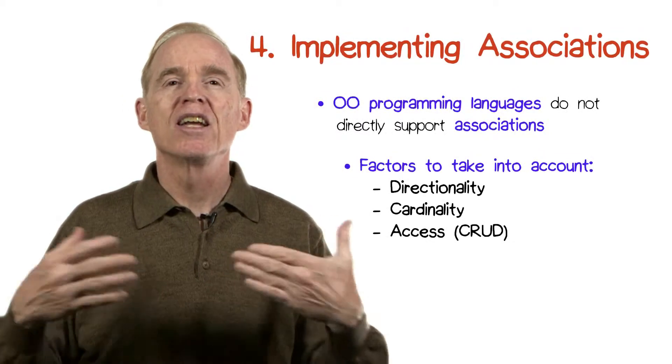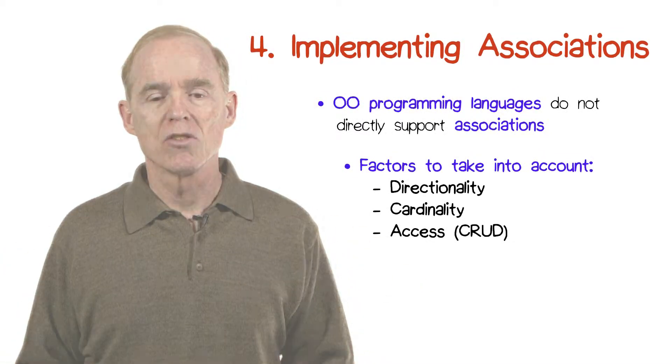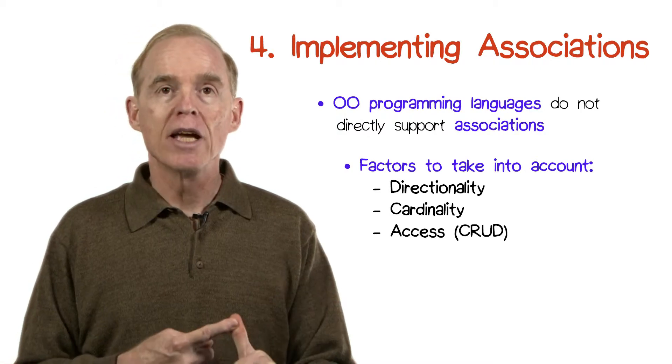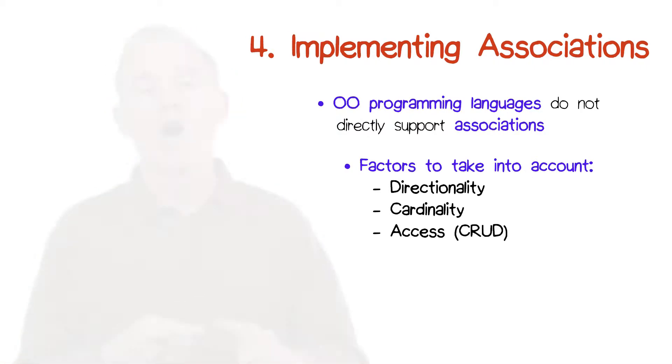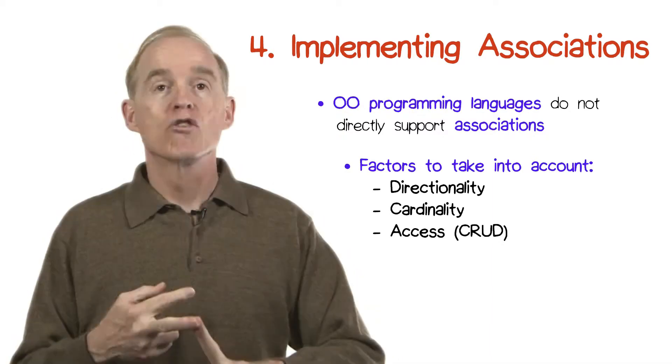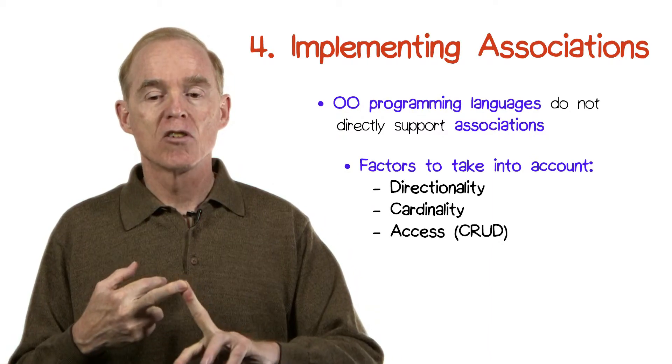And third is the kind of access you're making to classes. Sometimes these are called the CRUD properties, where C stands for create — that is, are you going to create instances? R is for read, meaning are you just going to query or access the instances? U is for update — could you change the instances? And D is for delete. Depending on which of these particular kinds of accesses and how frequently they occur, it might, particularly in the performance area, affect how you choose to implement them.